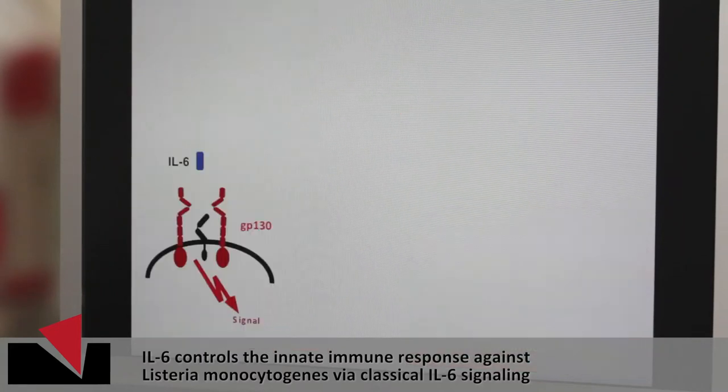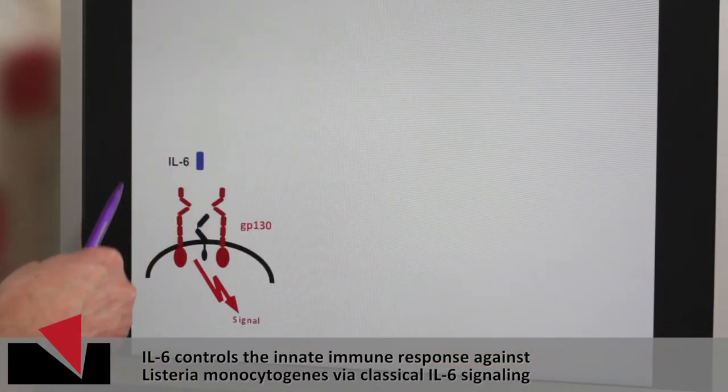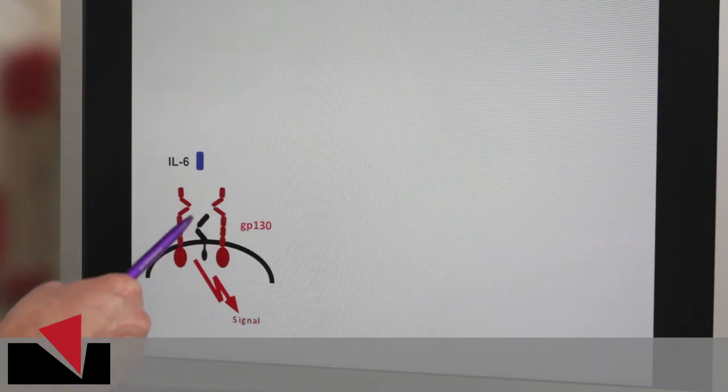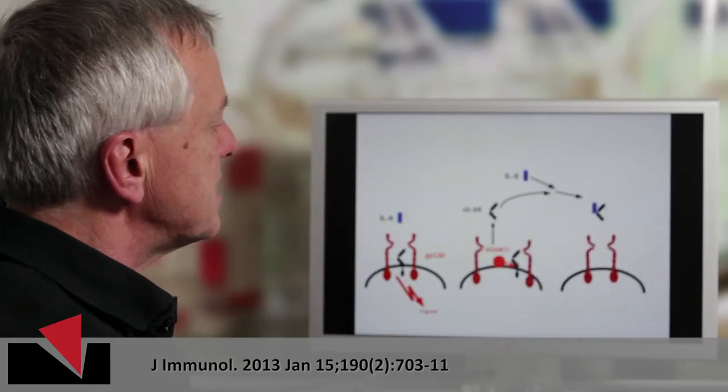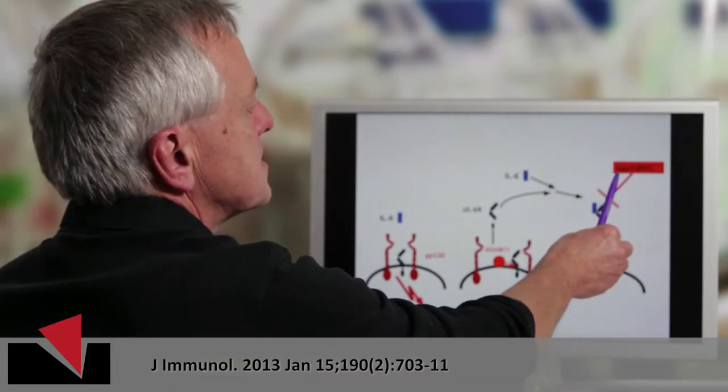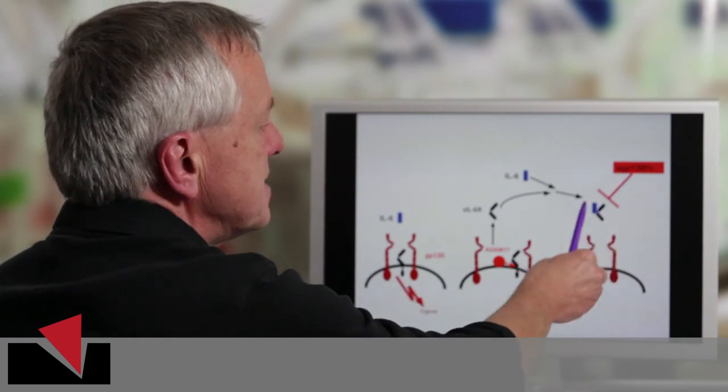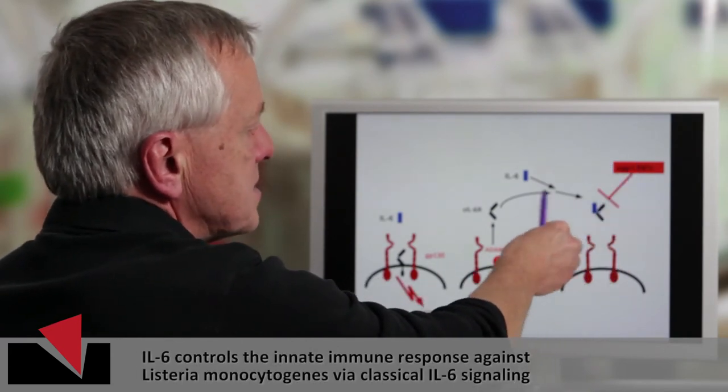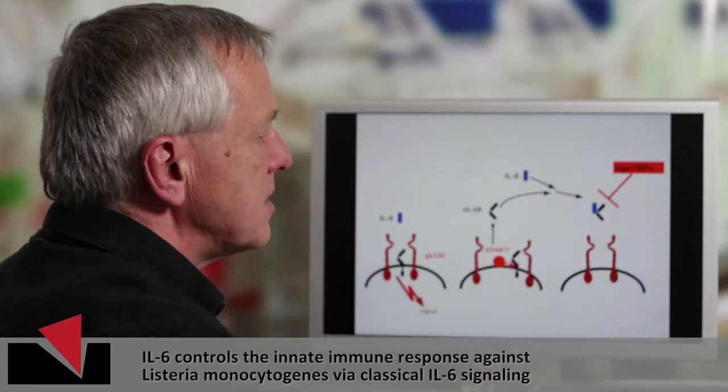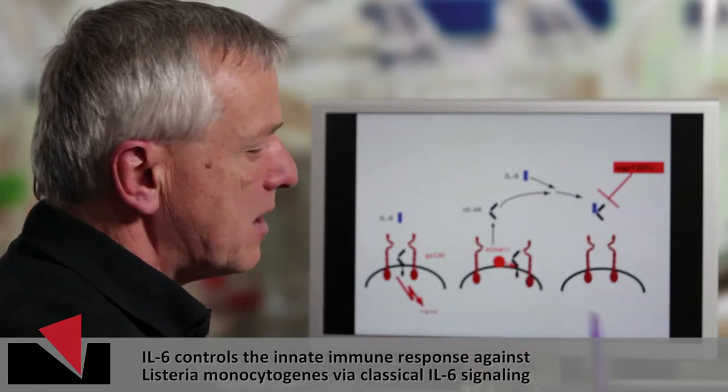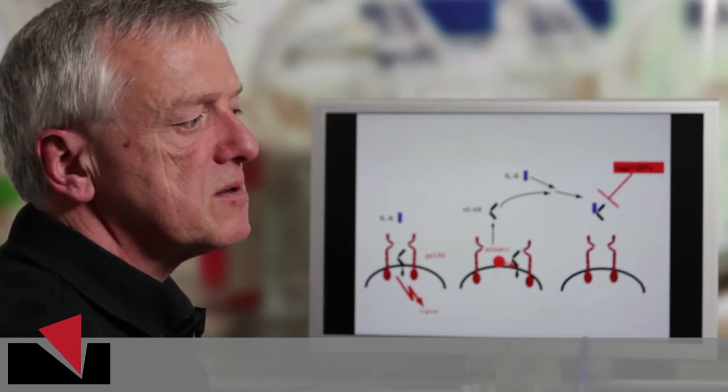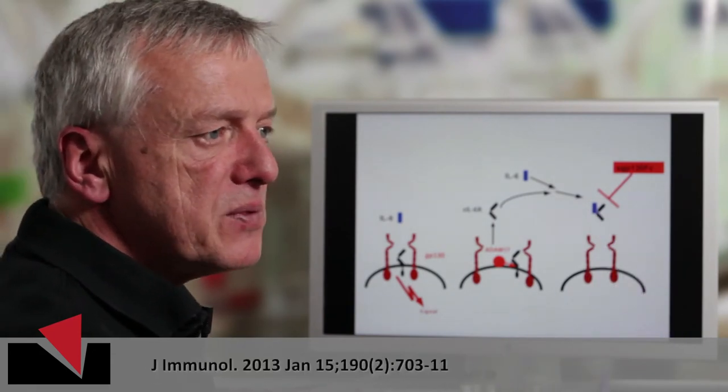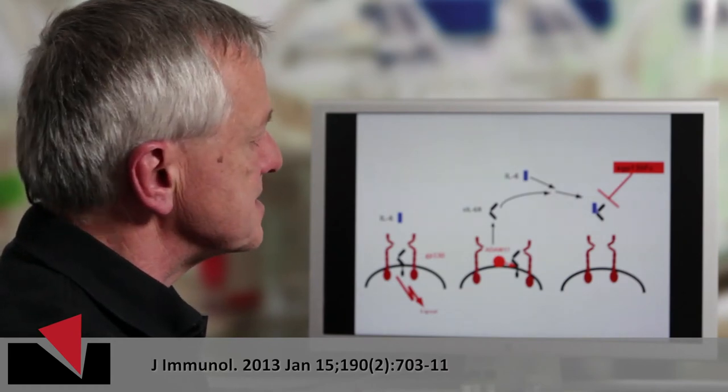This classic signaling, via the membrane-bound receptor, can be blocked, and this is actually done in the clinic already, with a neutralizing antibody. Whereas we have generated a protein called soluble GP130-FC, which selectively blocks the response via the soluble IL-6 receptor. And the question was whether the one or the other protein would be more beneficial in the treatment of auto-inflammatory diseases.